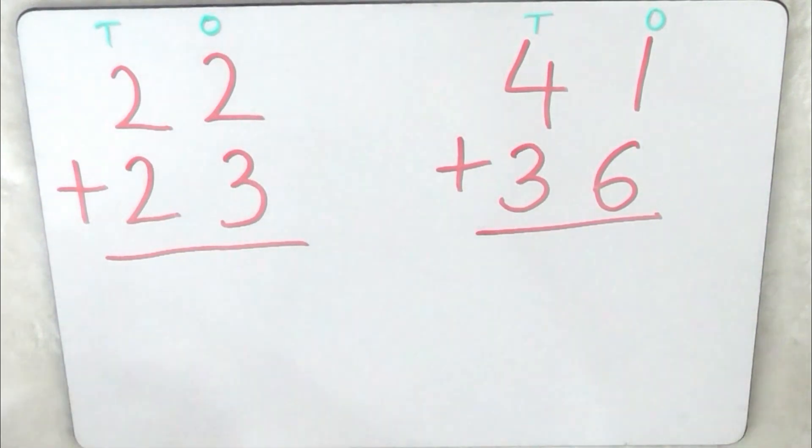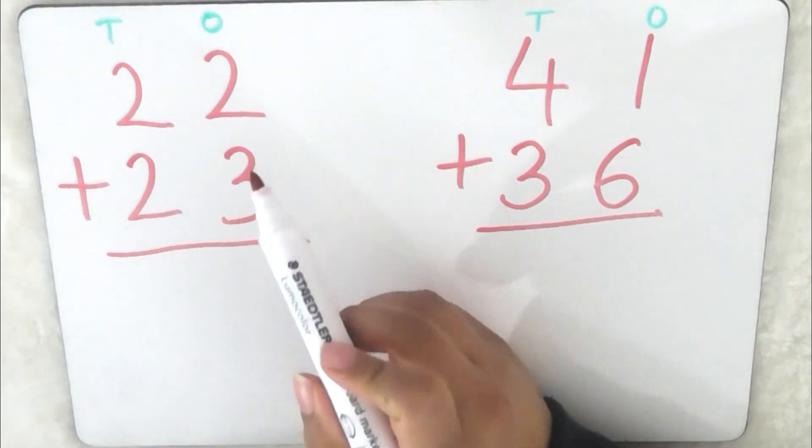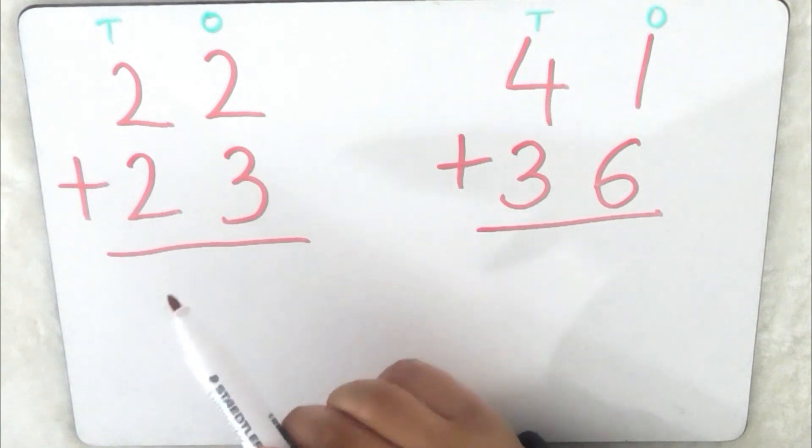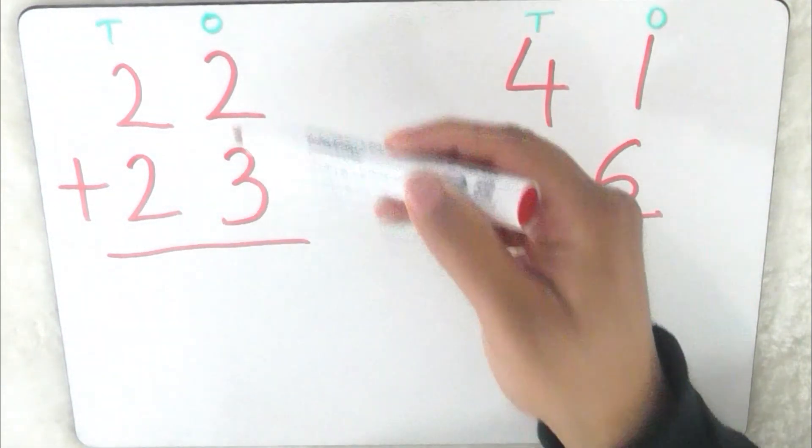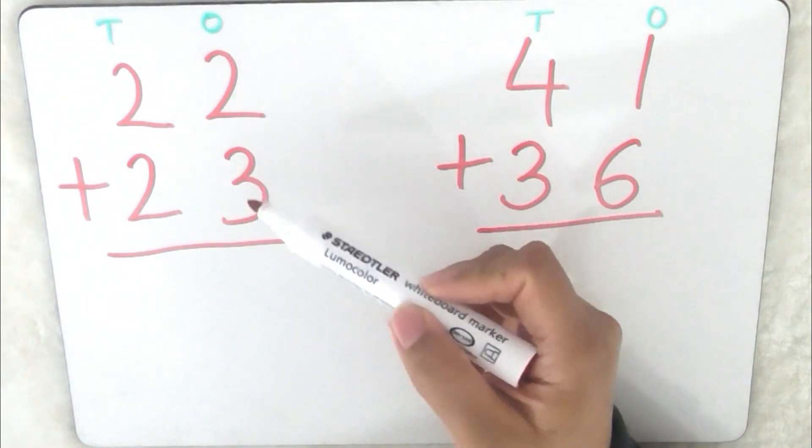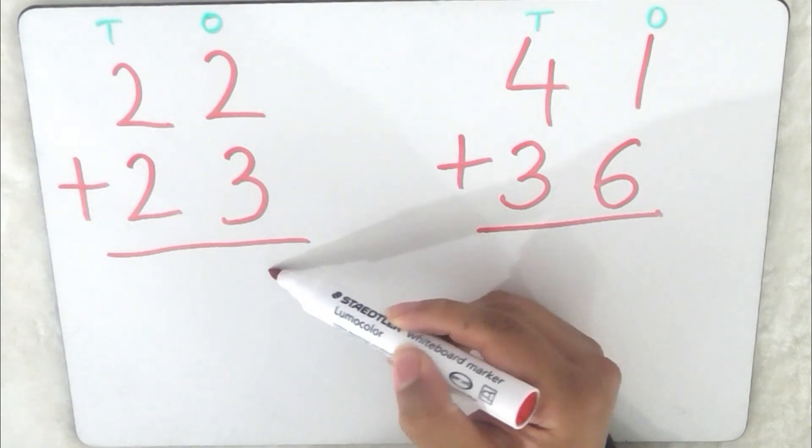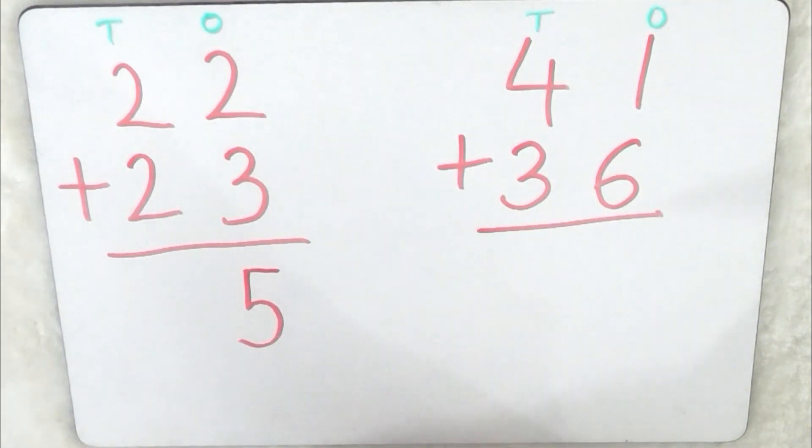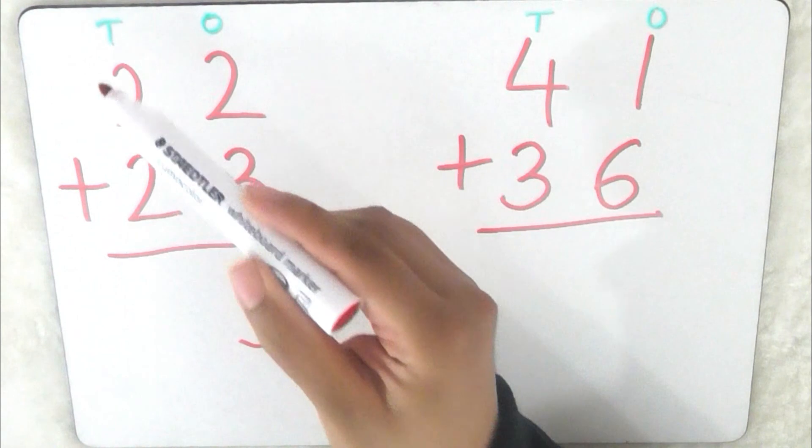Okay now you've had some time to do that, let me show you if you got it right. So let's start off with this one first, 22 add 23. So remember we start with the ones first, so we do 2 add 3 which is 5, so I put a 5 here. Then we do 2 add 2, so we do the tens, and 2 add 2 is 4, so the answer is 45.